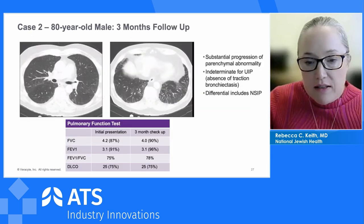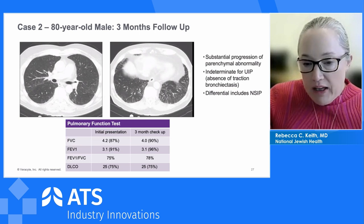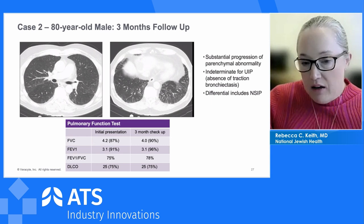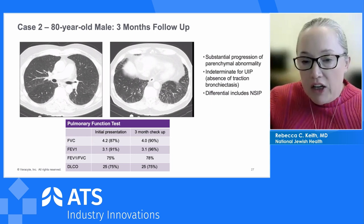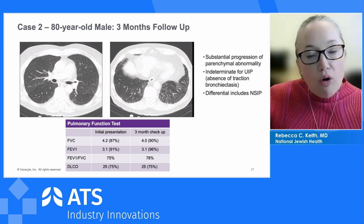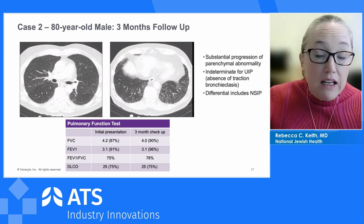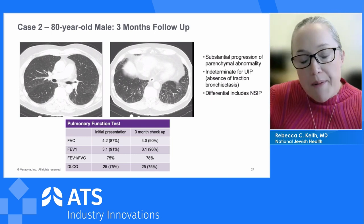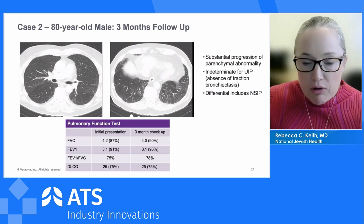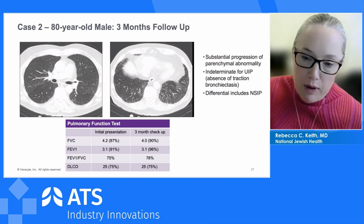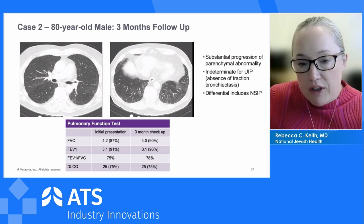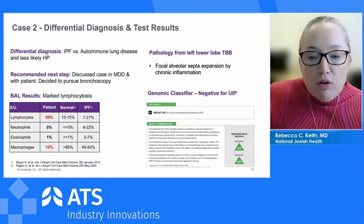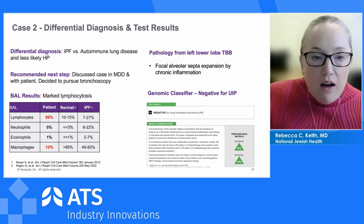His CT imaging shows a mild interstitial abnormality with reticulation creeping in at the bases. We talked about this early. I don't have a diagnosis — it could be idiopathic pulmonary fibrosis very early, or I'm concerned about autoimmunity, although we can't identify a definable autoimmune condition. There's no clear evidence of exposures or hypersensitivity pneumonitis. After shared decision making, the decision was to reevaluate in three months.